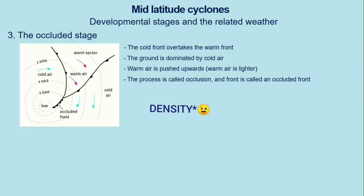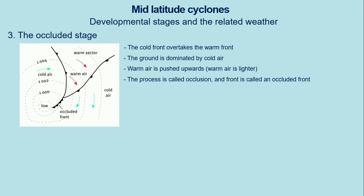The process of cold air pushing the warm air up into the atmosphere is called occlusion, and you will have what is known as the occluded front. The occluded front consists of two front representations combined. In the occluded stage, cold air pushes warm air into the atmosphere because the cold air is more dense than the warm air, forcing the warm air upward.